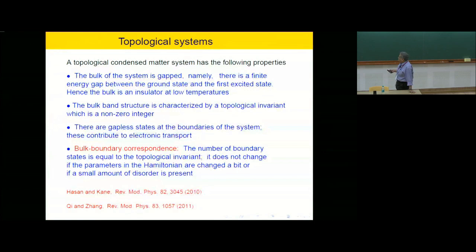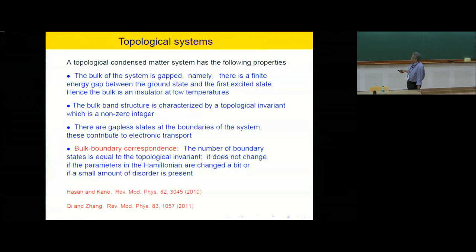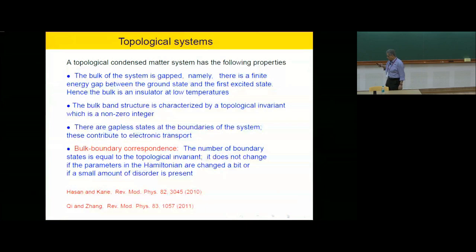Now in condensed matter systems, you call something topological if it has the following properties. The bulk of the system is gapped — there's a finite energy gap between the ground state and the first excited state, so it's an insulator at low temperatures. The bulk band structure should be characterized by some topological invariant which is a non-zero integer. There are gapless states at the boundaries of the system, and they contribute to electronic transport. And very importantly, there is a correspondence between the bulk structure and the boundary structure — called the bulk-boundary correspondence. The number of boundary states with a given momentum or other quantum number is equal to the topological invariant.